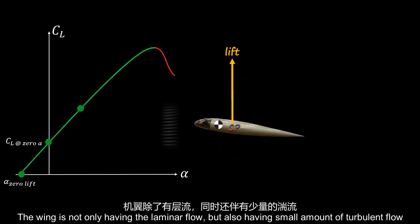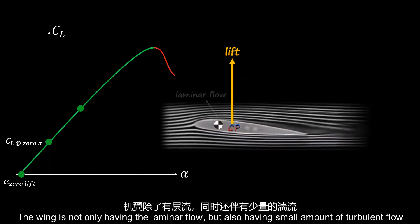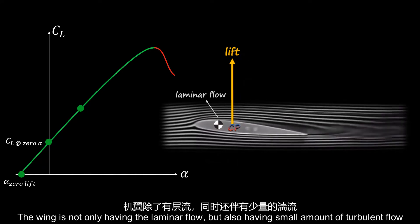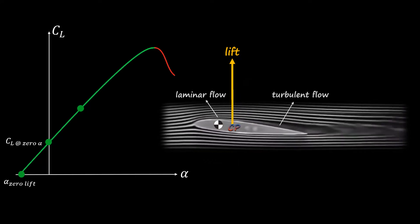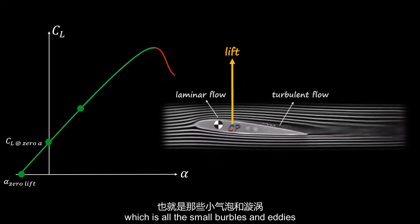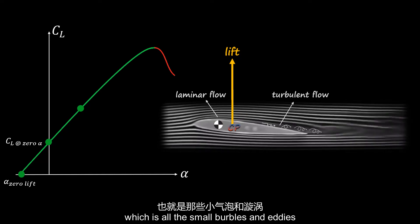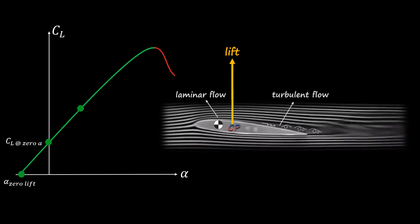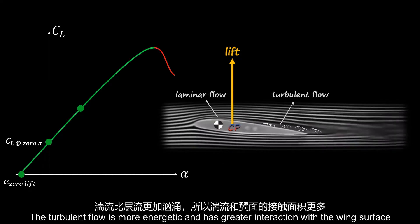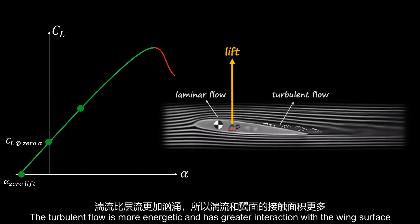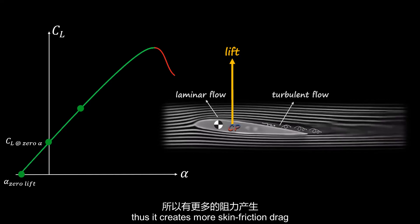The wing is not only experiencing laminar flow, but also a small amount of turbulent flow, which includes small bubbles and eddies. The turbulent flow is more energetic and has greater interaction with the wing surface, thus it creates more skin friction drag.